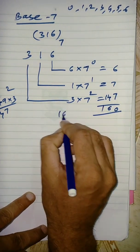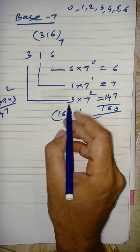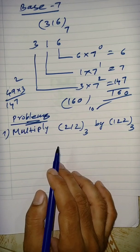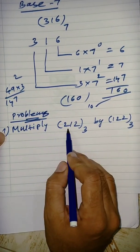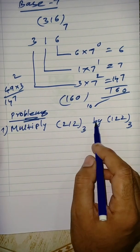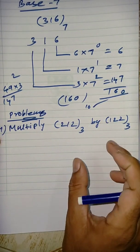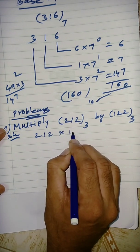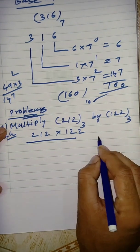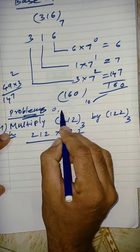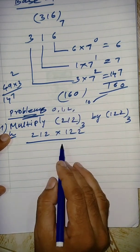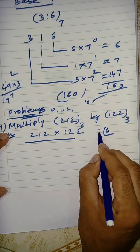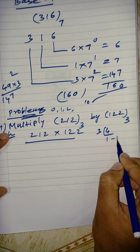In the problems, multiply 212 base 3 by 122 base 3. Base 3 uses digits 0, 1, 2. For example, 2 × 2 = 4, but in base 3 we convert: 4 = 1×3 + 1, so write 1 and carry 1. Continuing: 2 × 2 = 4, plus carry 1 = 5; 5 in base 3 = 1×3 + 2, write 2 carry 1. Then 1 × 2 + carry = adding columns similarly in base 3. The final result of the multiplication in base 3 is 100110.